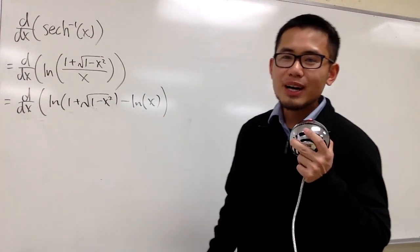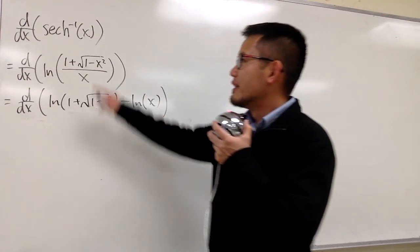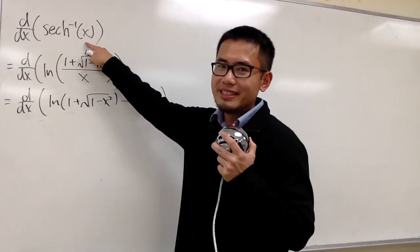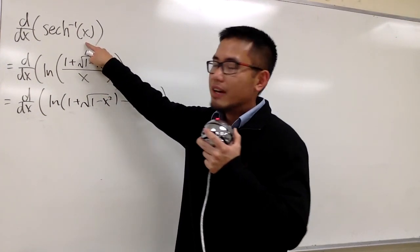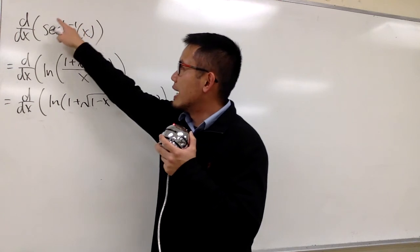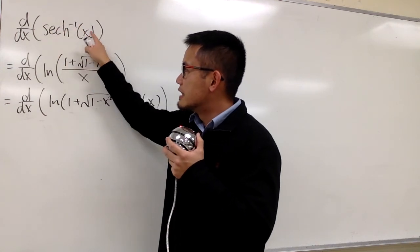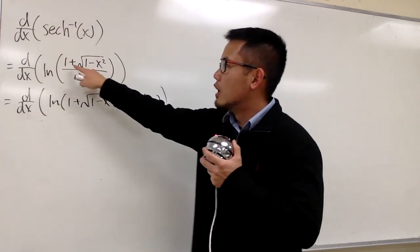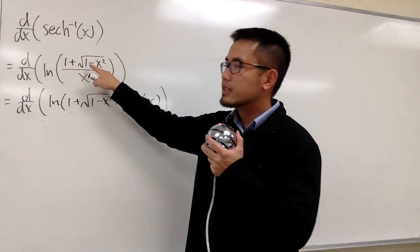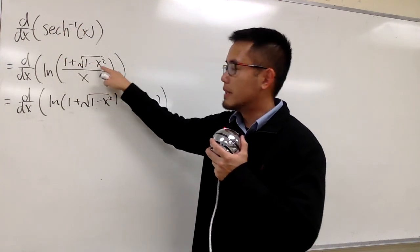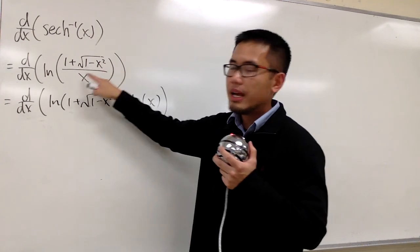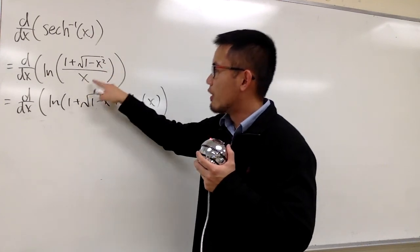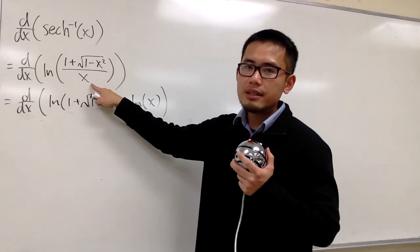I'm going to show you how to differentiate the inverse hyperbolic secant x. First, we have to know that this is the same as ln of parentheses 1 plus square root of 1 minus x squared, and then over x.